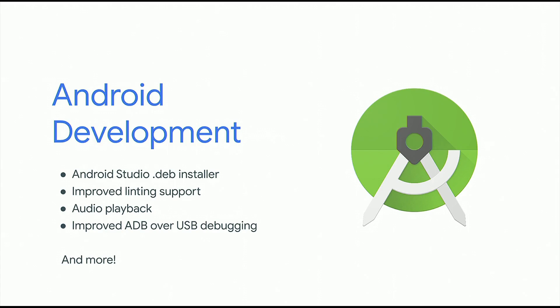Another thing we've done is doubling down on improving developer quality. First, there is a one-click installer for Android Studio — much less hassle than before. We also improved linting support, which highlights where you may be doing something not ideal for Chrome OS. And inside the Linux VM, we added audio support, which means all the audio tools you're used to on Linux work directly — things like Audacity are all working.